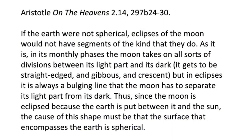So, that's the proof. Let's read it out again. If the earth were not spherical, eclipses of the moon would not have segments of the kind that they do. As it is in its monthly phases, the moon takes on all sorts of divisions between its light part and its dark. It gets to be straight-edged and gibbous and crescent. But in eclipses, it's always a bulging line that the moon has to separate its light part from its dark. Thus, since the moon is eclipsed because the earth is put between it and the sun, the cause of this shape must be that the surface that encompasses the earth is spherical.